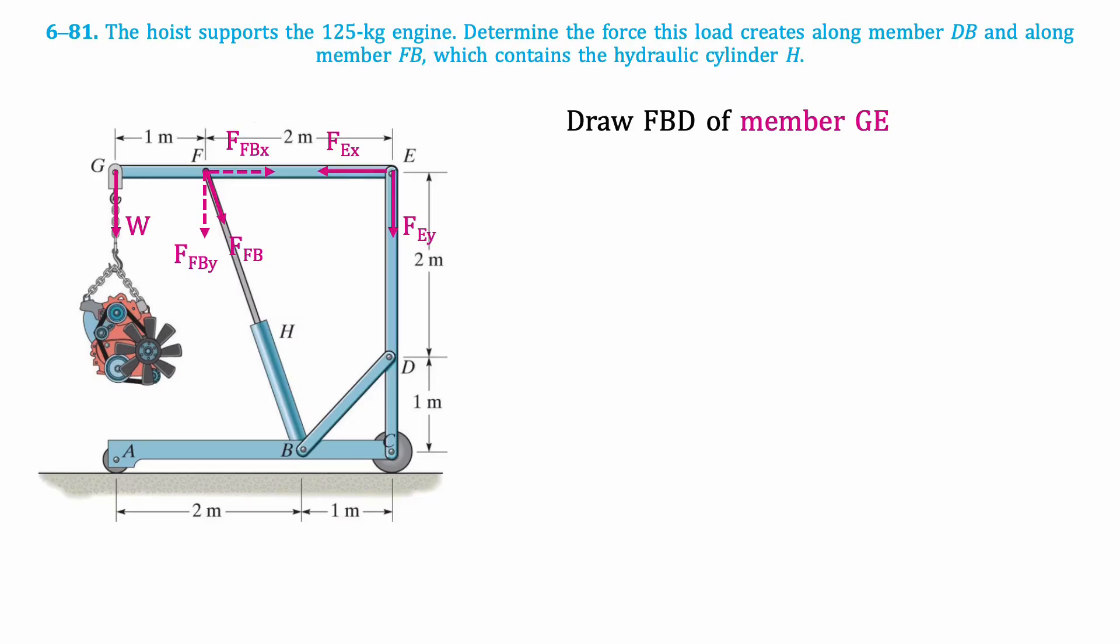Now, let's solve for the value of W. This can be done by multiplying the given mass by gravity. The result is 1226 newtons. Next, we'll find the angle made by member FB and the horizontal using the following equation. The result is 71.6 degrees.